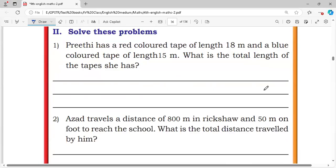Next, solve this problem. Preethi has a red colored tape of length 18 meter and a blue colored tape of length 15 meter. What is the total length of tape she has? They are asking total length of the tape. Just add 18 meter and 15 meter. 8 plus 5 is 13, carry 1. 1 plus 1 is 2, 2 plus 1 is 3, equals 33 meter.